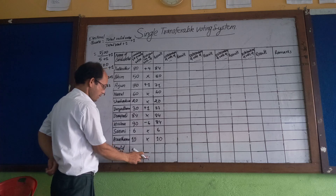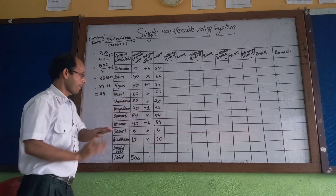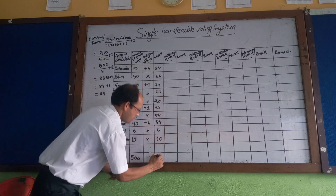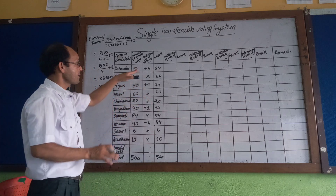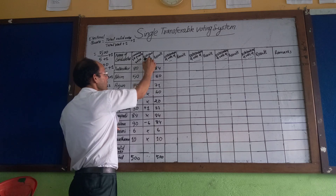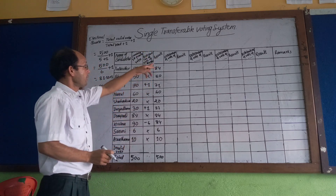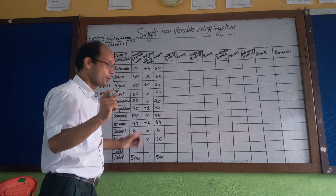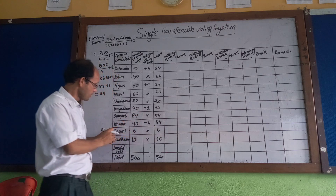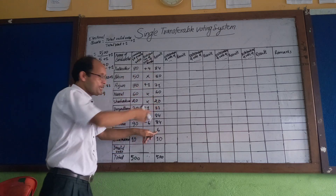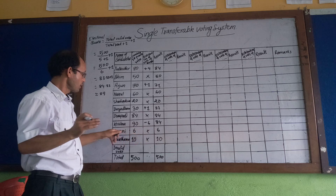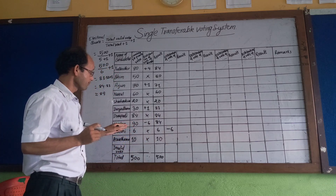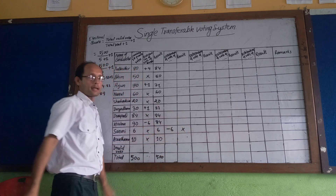There are no invalid votes in this step, so all 500 votes are accounted for. The first round is now complete. In the second step, Krishna's surplus votes have been distributed. Among the remaining 9 candidates, the one with the least votes is eliminated. Satruni has received only 6 votes — the least among 10 candidates — so Satruni's votes will be transferred to other candidates and Satruni is out of the election race.